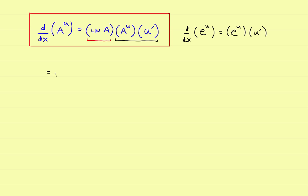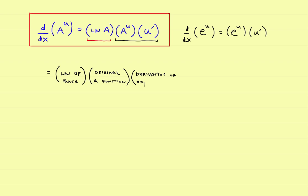It's actually a little bit easier if you write it out in English. The derivative of a to the u is: the natural log of the base, times the original function, times the derivative of the exponent. If you say it like that as you do it, it makes the problems pretty straightforward. Let's look at a few examples — it's actually a pretty easy rule to use.